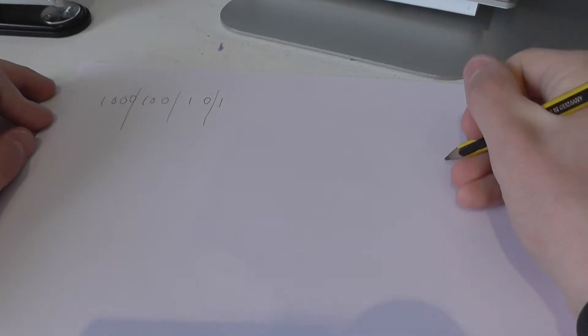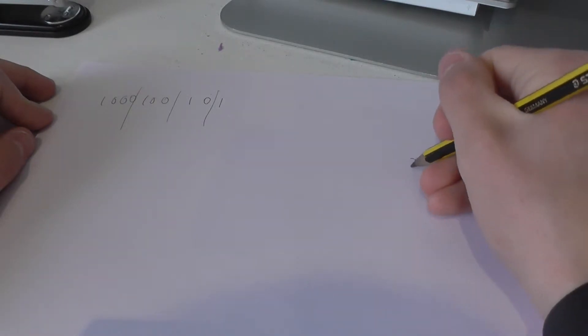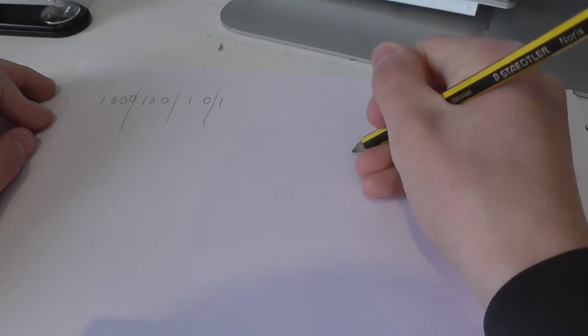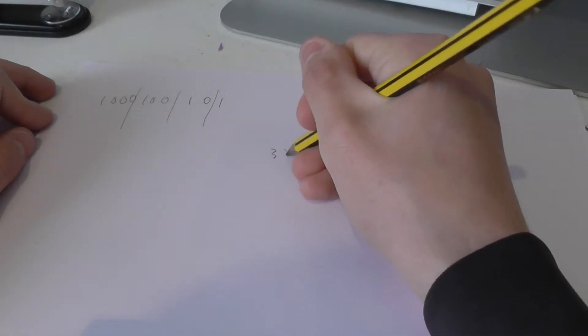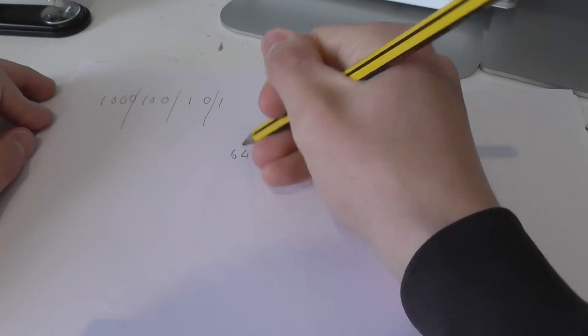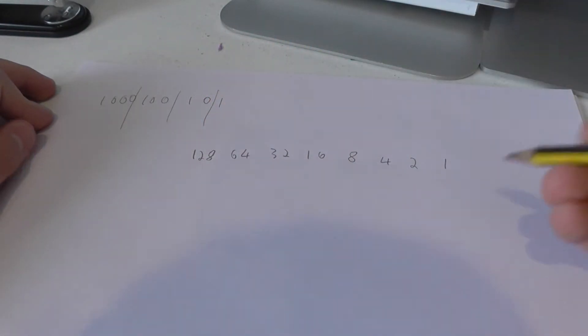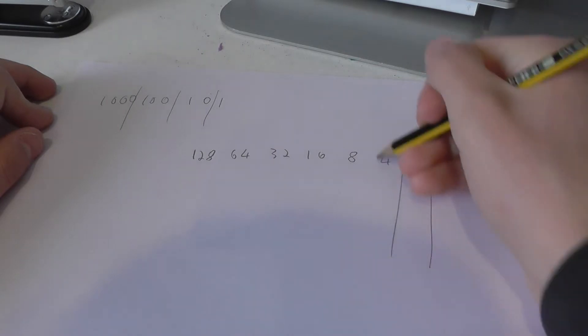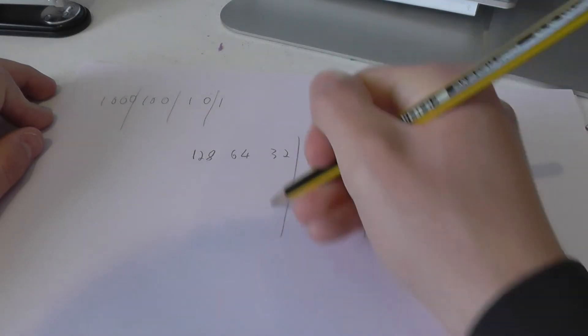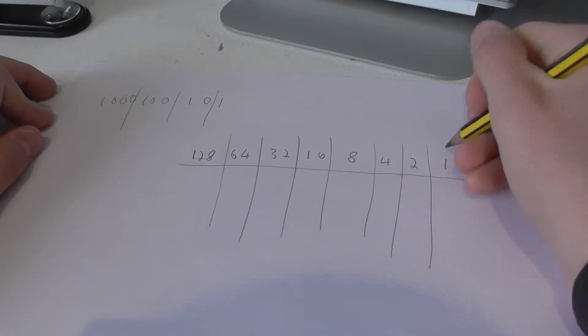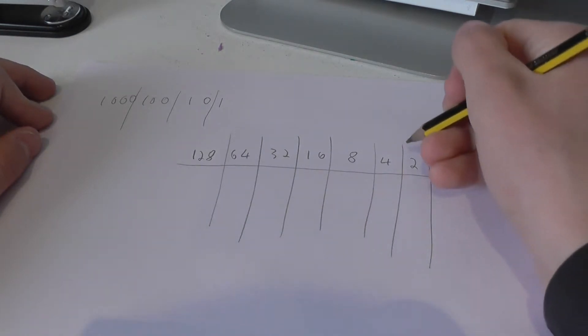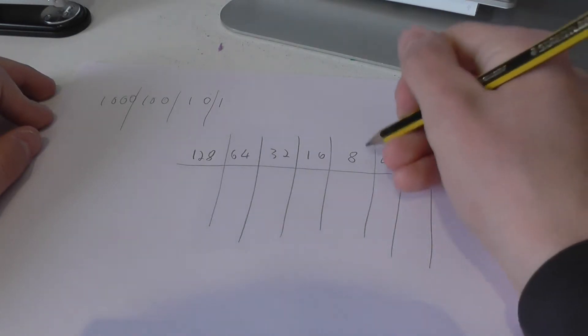Binary goes 1, 2, 4, 8, 16, 32, 64, 128, and onwards. And if we split those up, each time we're just timesing by 2. 1 times 2 is 2, 2 times 2 is 4, 4 times 2 is 8, and onwards.